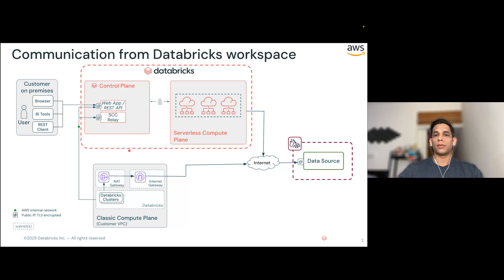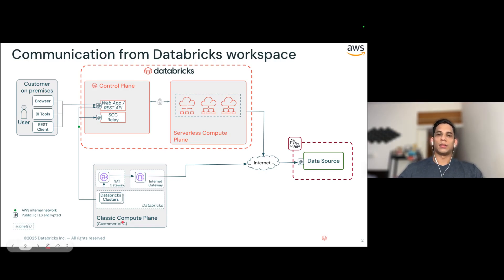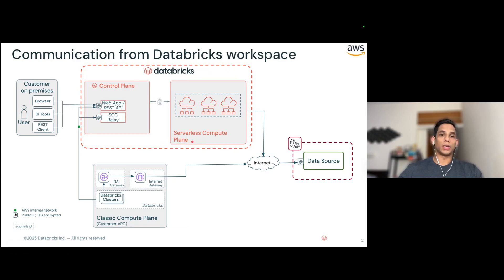Then we have the compute plane, which is where your cluster VMs actually spin up, and there are two flavors of the compute plane available to you. The classic compute plane, which sits in your VPC in your cloud account — for example, in your AWS account — and the serverless compute plane, which sits on the Databricks side, completely outside of your AWS account.